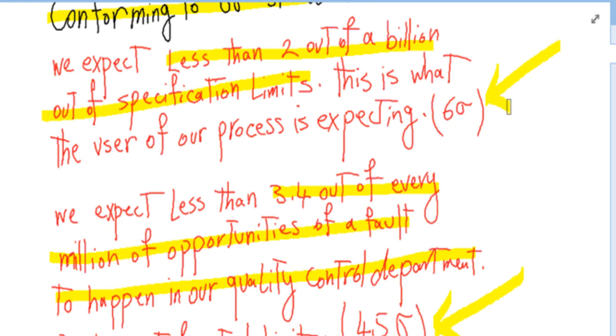In other words, the expected variations in our process are supposed to be so low that the expectations of the customer is six standard deviations far from the variations that we are observing.